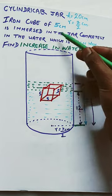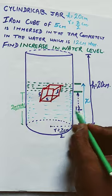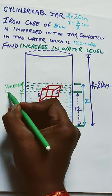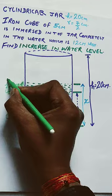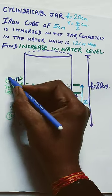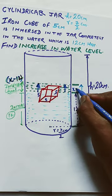In this question of mensuration, we need to find out the increase in water level after immersion of a cubical solid object into the cylinder. Initially the level of water is 12 centimeter high. After the insertion of the cube it rises up to x centimeter, so we will find out the increase in water level, that is x minus 12.